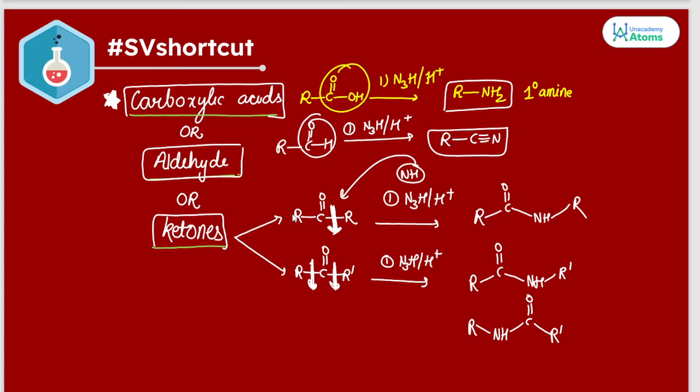So the reaction is simple. In carboxylic acid, we directly get R-NH2, but in aldehyde we have to go with N3H and also the reduction process, because R-C≡N is forming here. Is it clear to you?